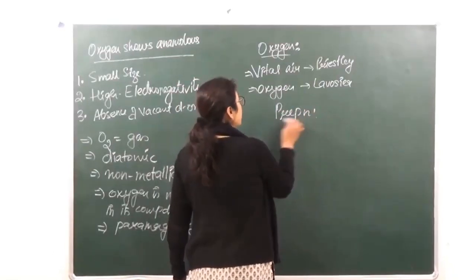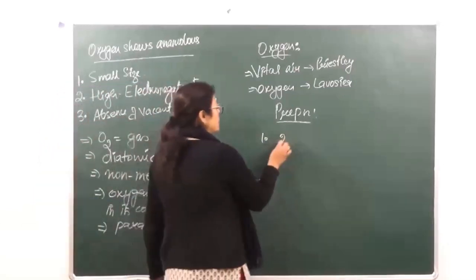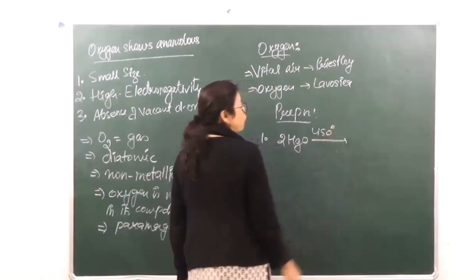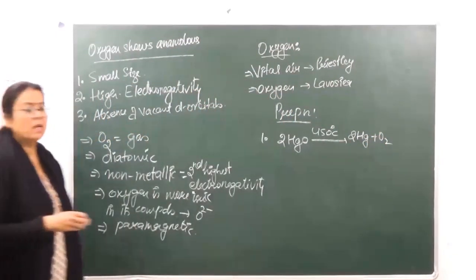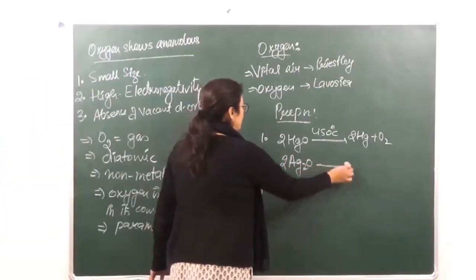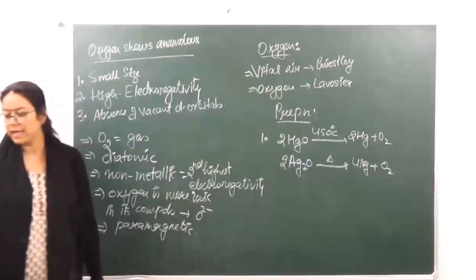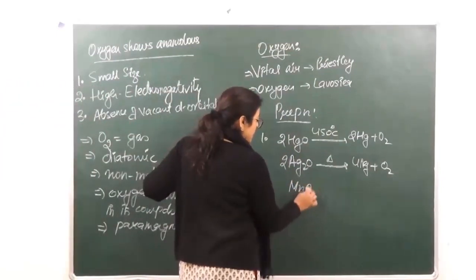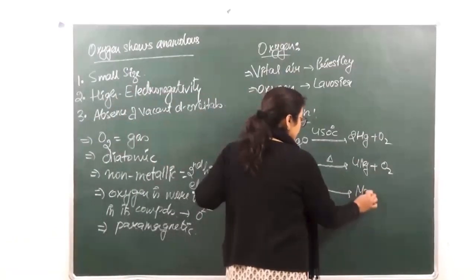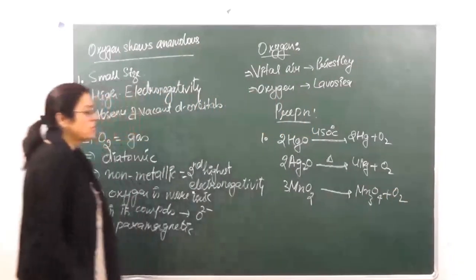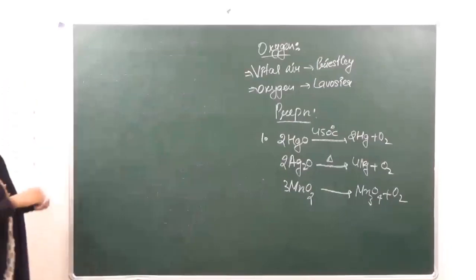The preparation of oxygen is easy — if we heat metallic oxides, that gives us oxygen. For example, heating mercury oxide at 450°C gives HgO → Hg + O2. Similarly, heating silver oxide gives silver plus oxygen. Heating manganese dioxide gives Mn3O4 plus oxygen. So by heating metallic oxides we can get oxygen.